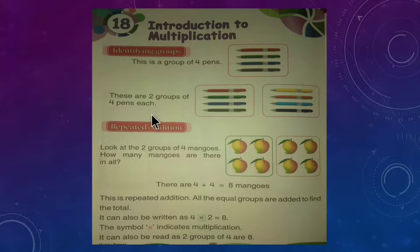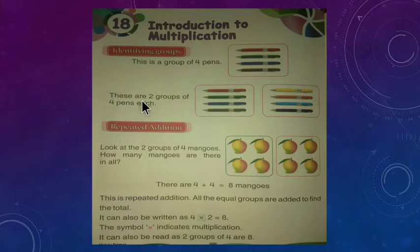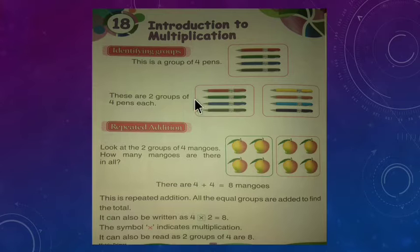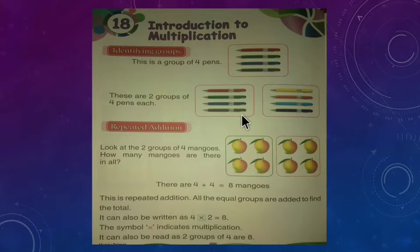Now, what are these? These are two groups of four friends each. Ye jo ek group hain, ye kitne ka group hai? Four friends ka group. Har ek group — dono group mein kitne kitne hain? Four friends. Now see: repeated addition.